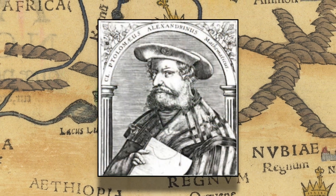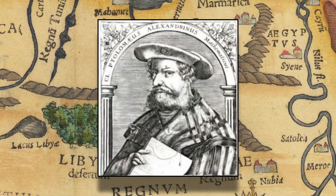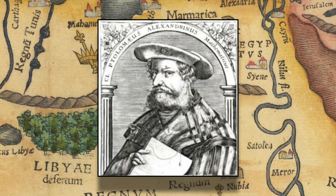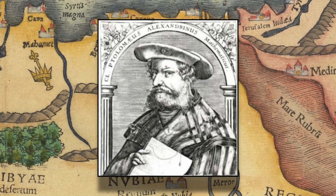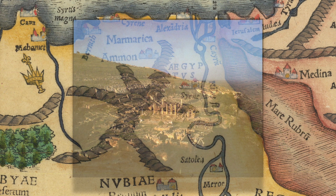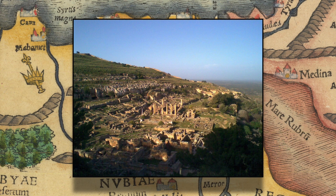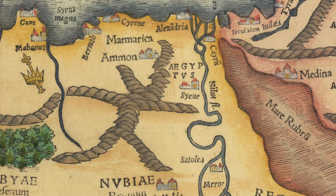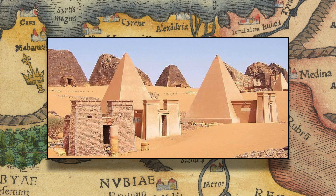The map was partly based upon the work of Ptolemy, the second-century Roman mathematician, astronomer, and geographer. This included cities, so some had become abandoned by this map's time, such as Cyrene, an ancient Greek and later Roman city in present-day Libya, and Meroe, an ancient city in modern-day Sudan, which was the capital of the Kingdom of Kush for several centuries.